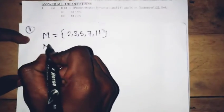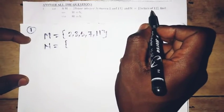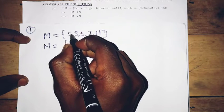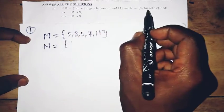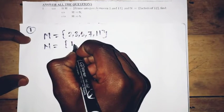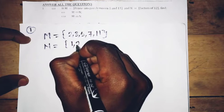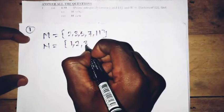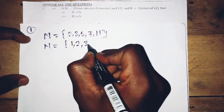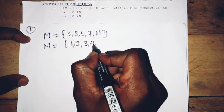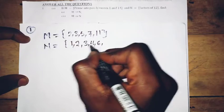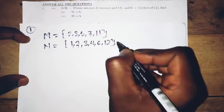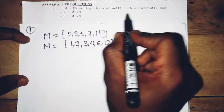And N is equal to the factors of 12. So the factors of 12 are: 1 times 12 is 12, 2 times 6 is 12, and 3 times 4 is 12. So the factors of 12 are 1, 2, 3, 4, 6, and 12. These are the numbers we have for the factors of 12.